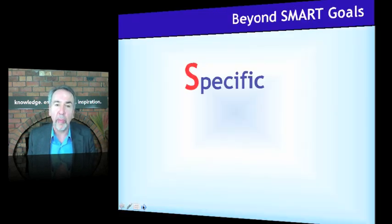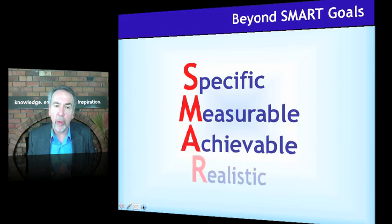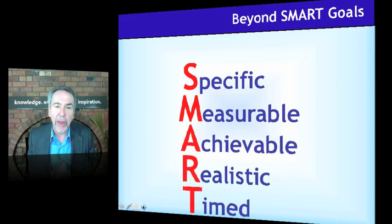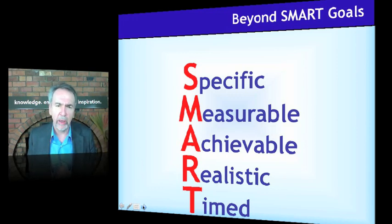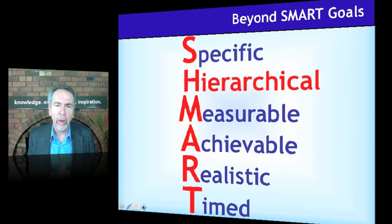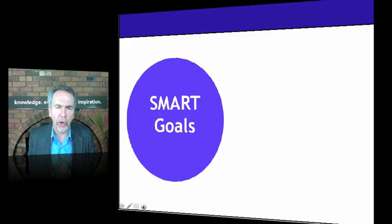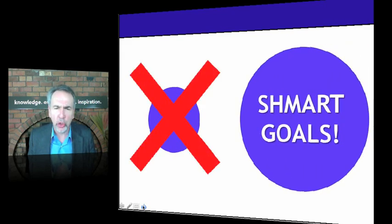So let's go beyond SMART Goals. SMART Goals — Specific, Measurable, Achievable, Realistic, and Timed — are missing the essential element of hierarchical links. So let's insert another word: hierarchical. Now we have hierarchical SMART Goals. SMART Goals are obsolete and inadequate in today's fast-moving times. The new paradigm is hierarchical SMART Goals.